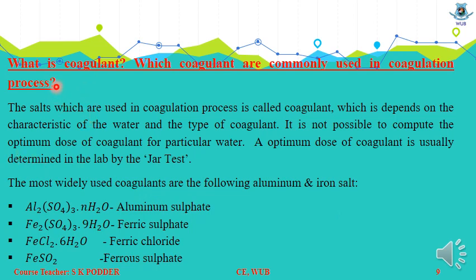The salt used in the coagulation process is called a coagulant. It is not possible to compute the optimum dose of coagulant for particular water analytically; it is usually determined in the lab by the jar test. The most widely used coagulants are aluminum and iron salts: aluminum sulfate, ferric sulfate, and ferric chloride.